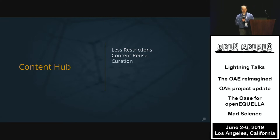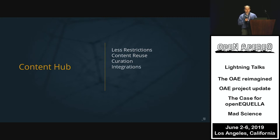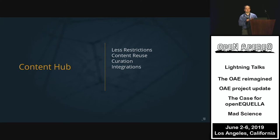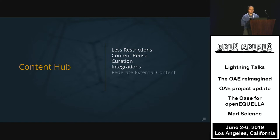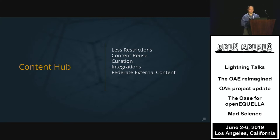You want to curate content — not every piece of content is created equally, and you don't want users to experience poor content because something was immediately available to your entire student body. Integrations matter because not one system is going to do everything really well. Allow your content hub to store and manage content well and then integrate out with presentation layers and authoring layers to do what they do really well. You also need to federate external content — you can't create one content hub that keeps all content you'd possibly want.